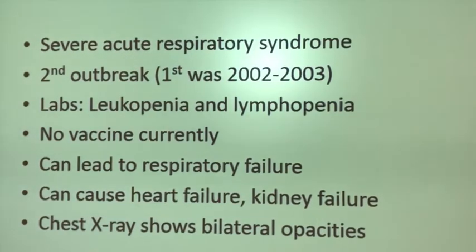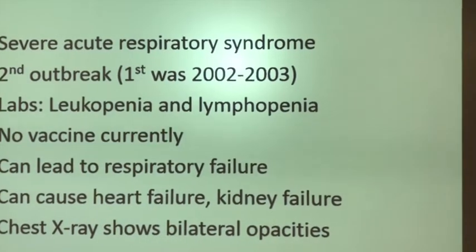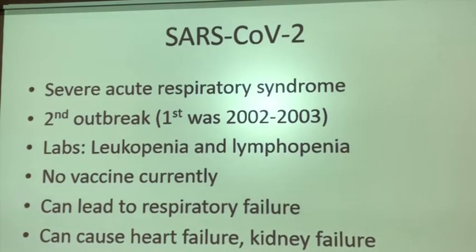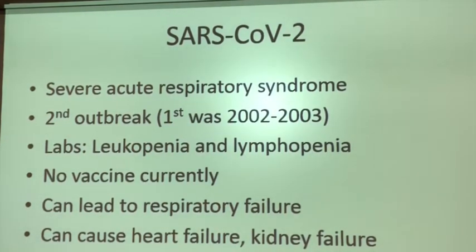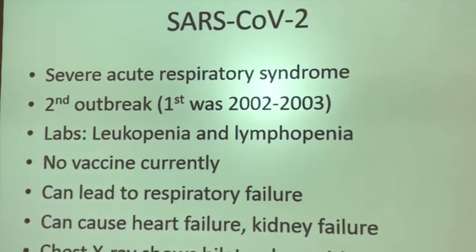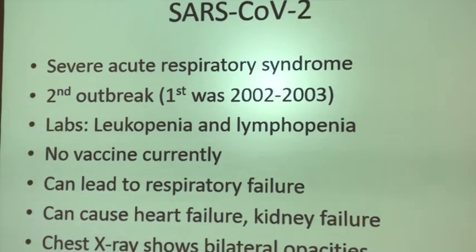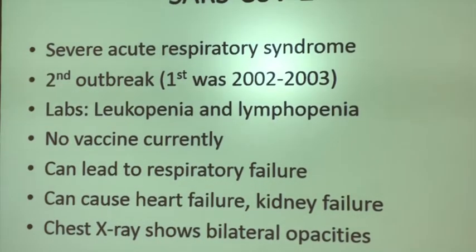This is the second coronavirus outbreak — COVID-2. The first outbreak was in 2002–2003 and was pretty well contained, mostly within China with a few cases outside. The labs would typically show a normal or even low white blood cell count — leukopenia. The lymphocytes may be normal or even low, and the neutrophils might be normal, since this is a viral infection.